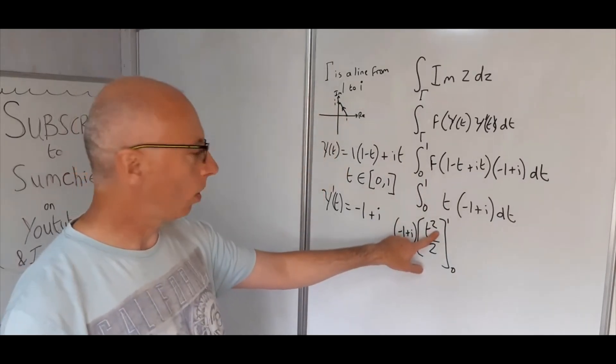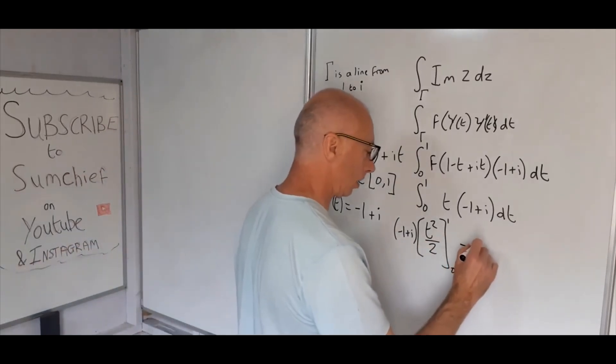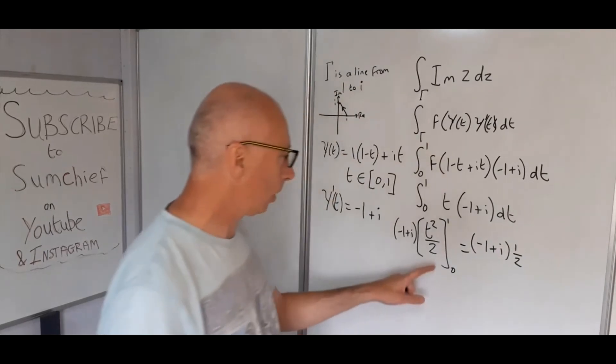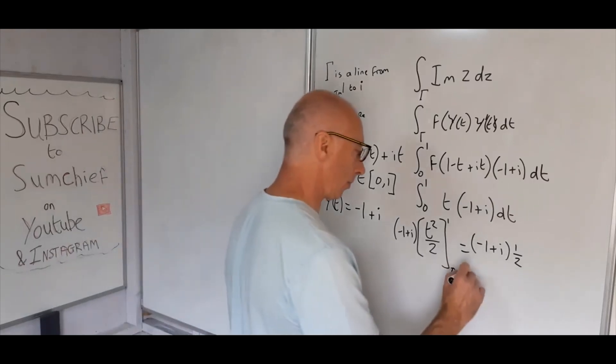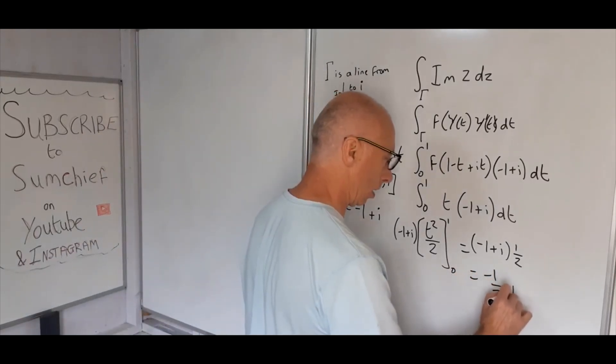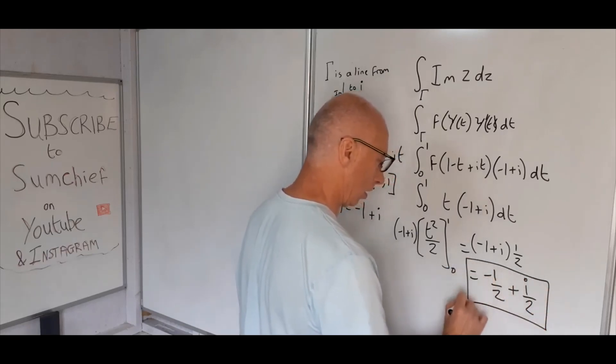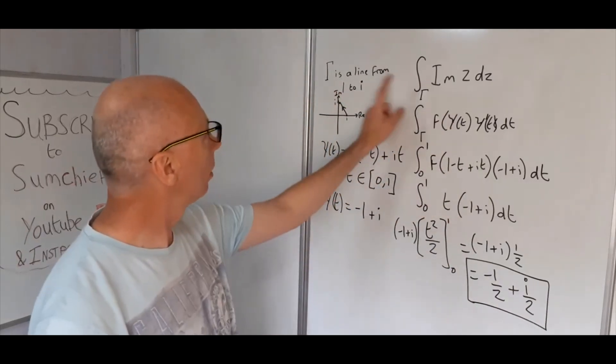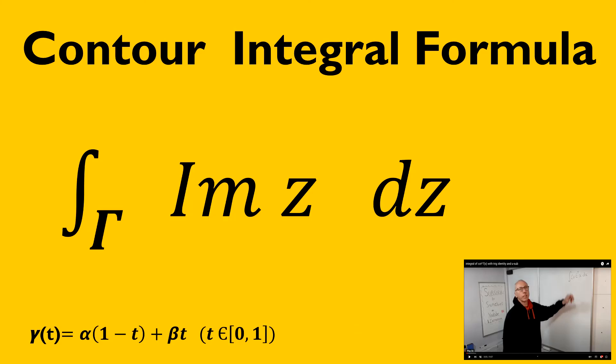When t is 1, this becomes 1/2, so it's (-1 + i) times 1/2. When t is 0, this whole thing disappears. So basically, our answer is -1/2 + i/2, and that's our answer in Cartesian form. See you next time.